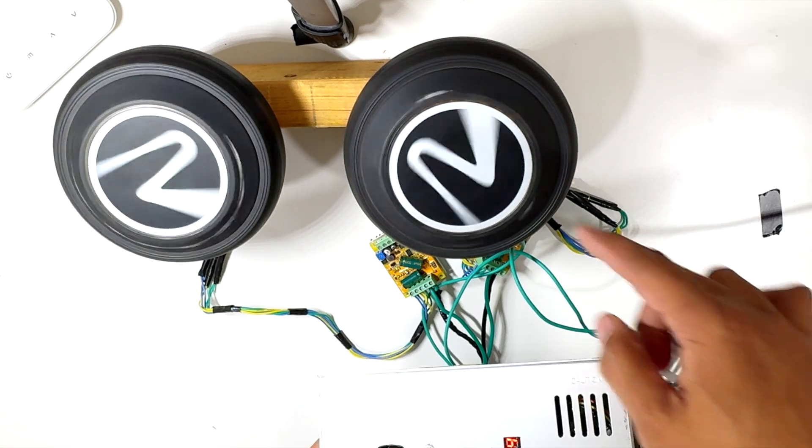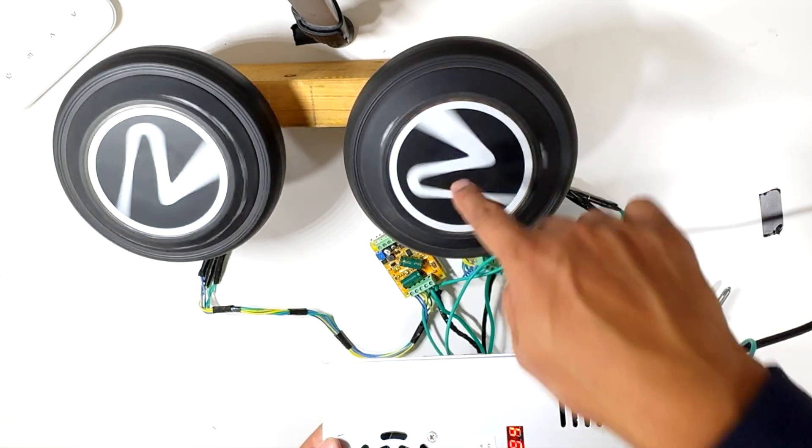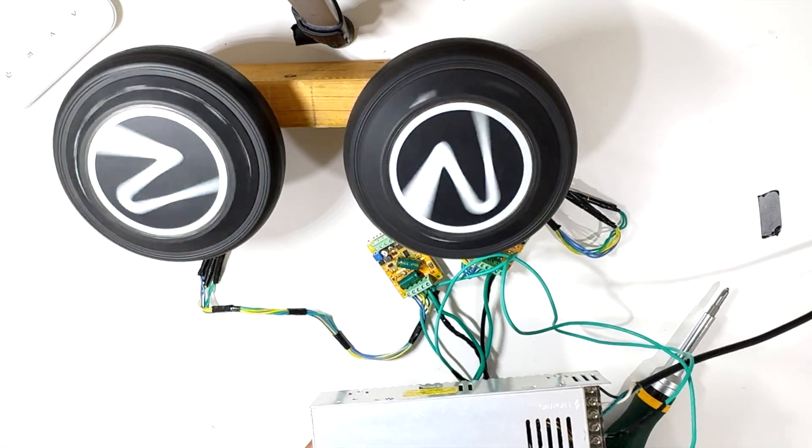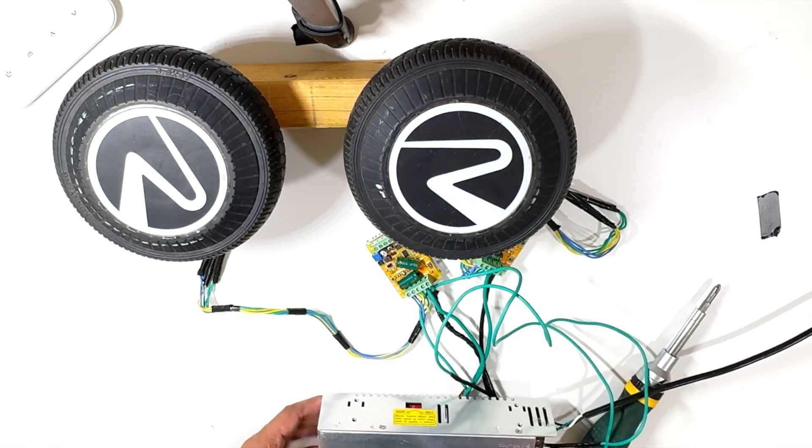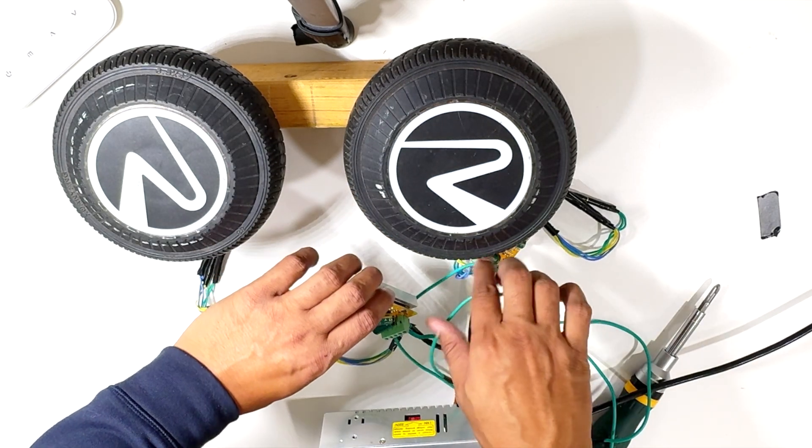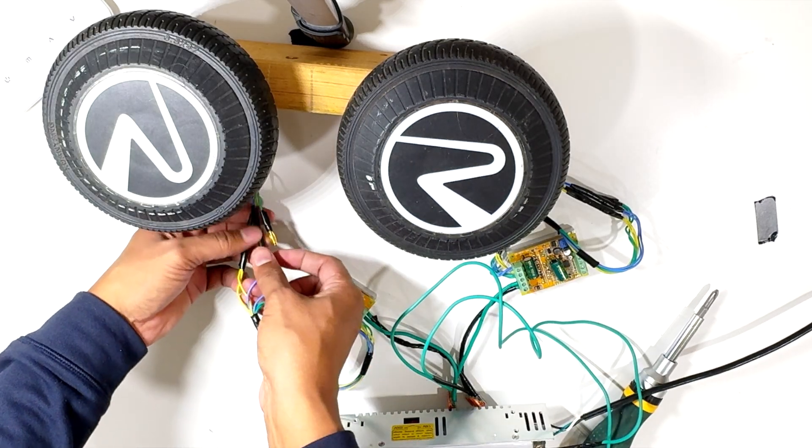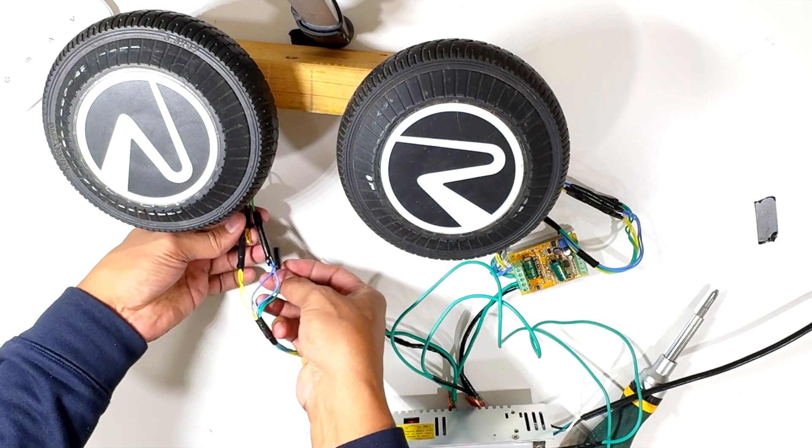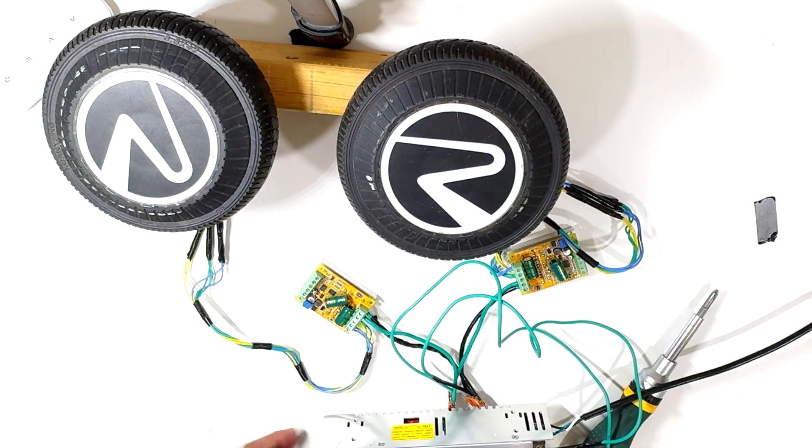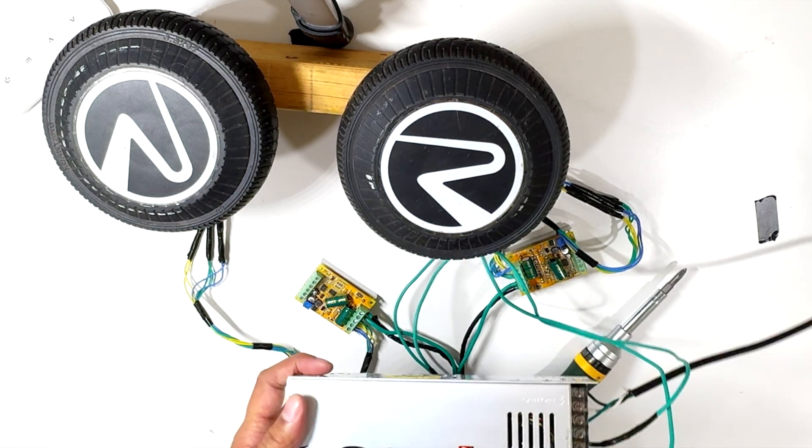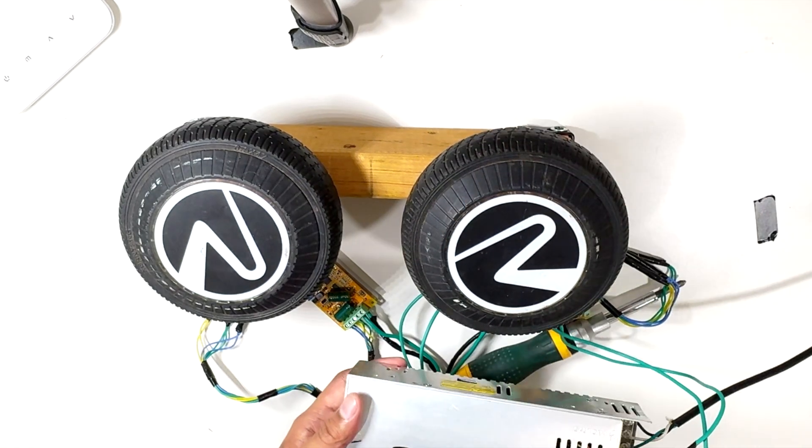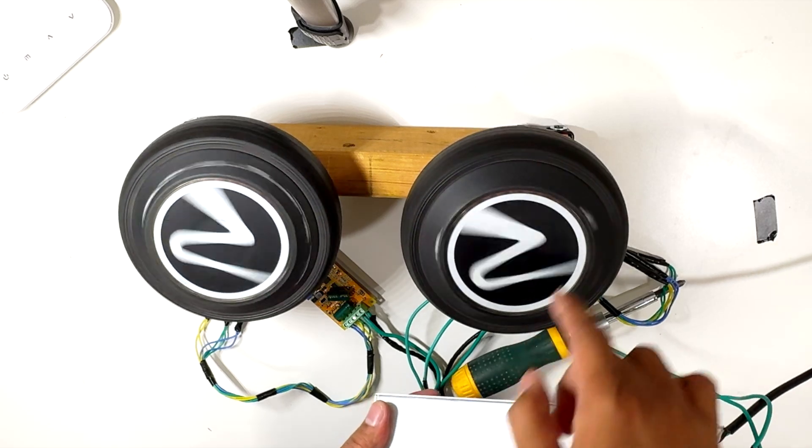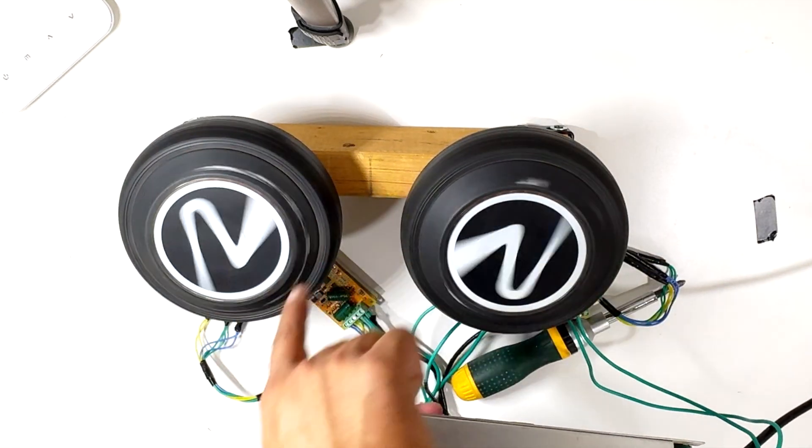But there is a problem. The problem is both wheels are spinning in the same direction. However, to throw the ball, one of the wheels needs to rotate in the opposite direction to the other. The funny part with the hub motor is we can change the direction of the rotation just by swapping the phase wires. After I swapped phase wires on one of the hub motors, let's see if they work as per the expectation. Yes, they are working well. They are spinning in the opposite direction to each other.